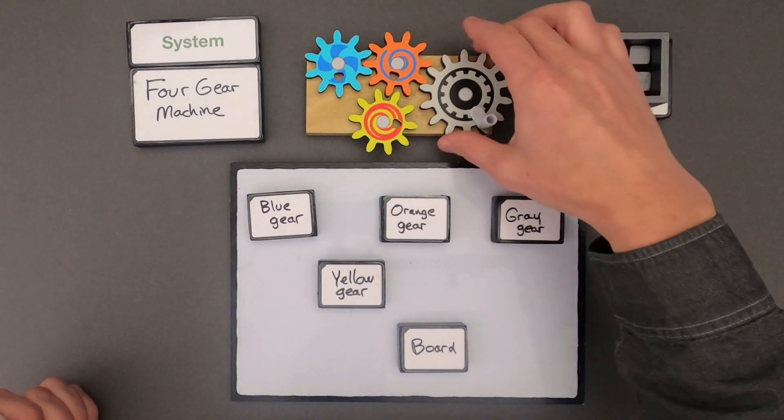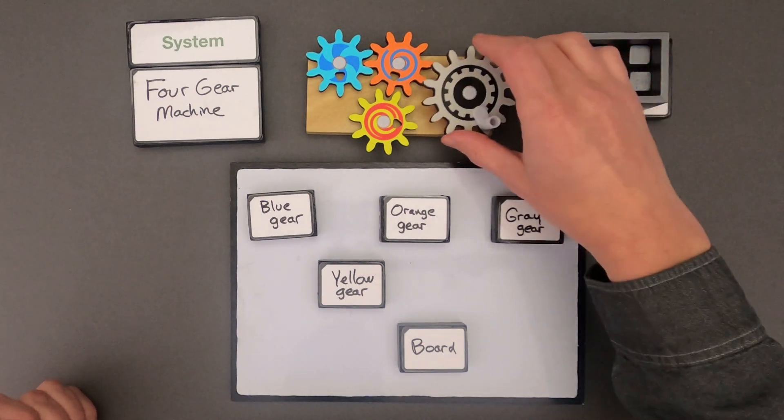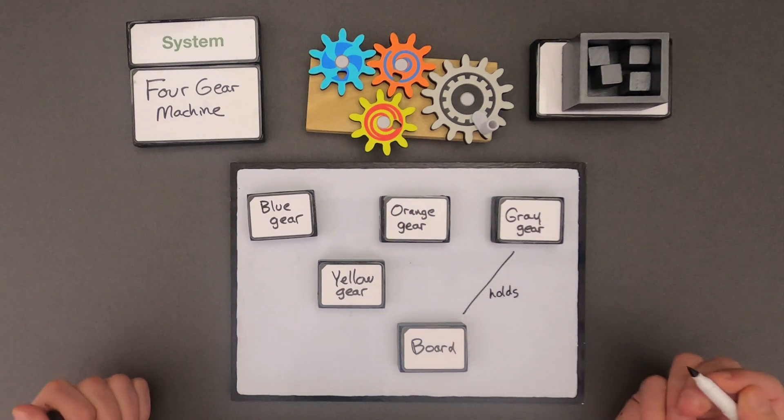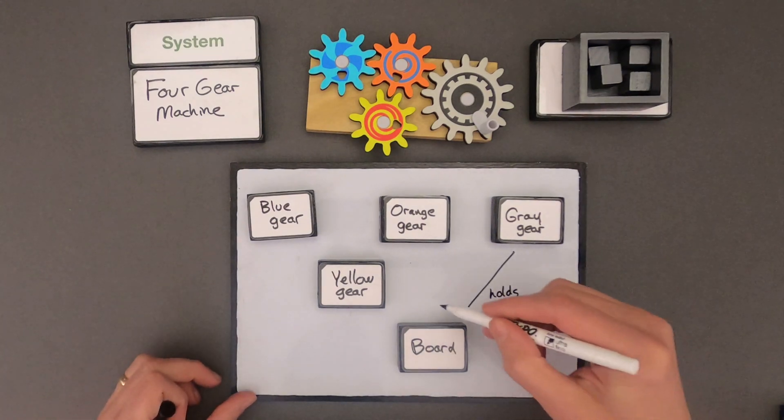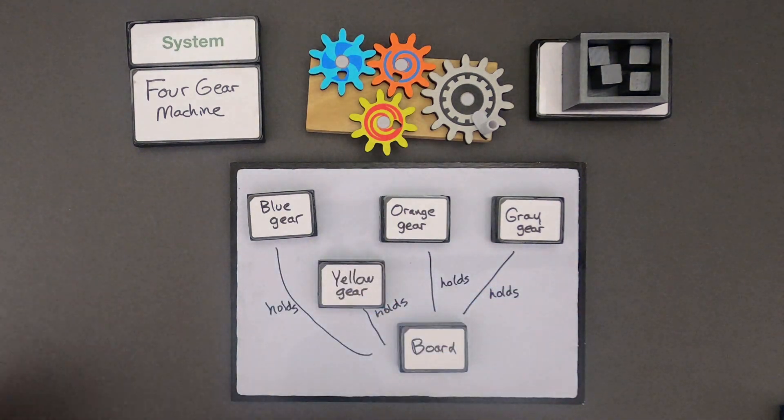So let's look at the gray gear. How does the gray gear work with the board? In other words, what's the relationship between the two? Well the board holds the gray gear. It also holds the orange gear, yellow gear, and blue gear. So that's how they work together.